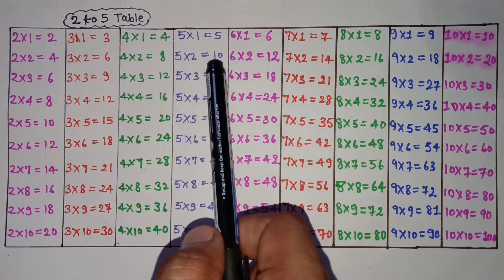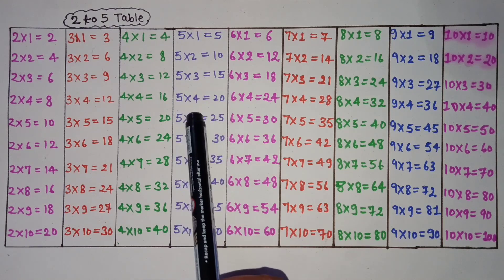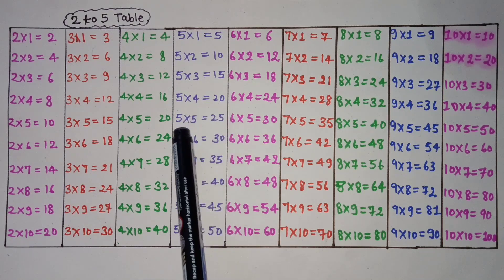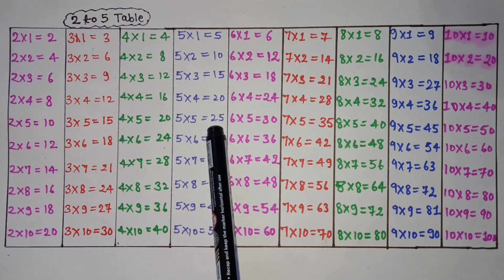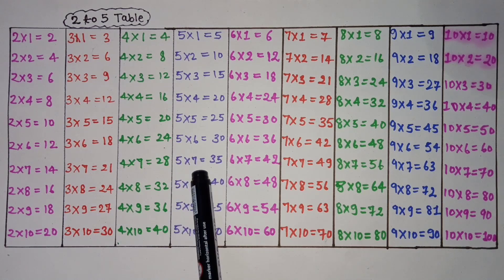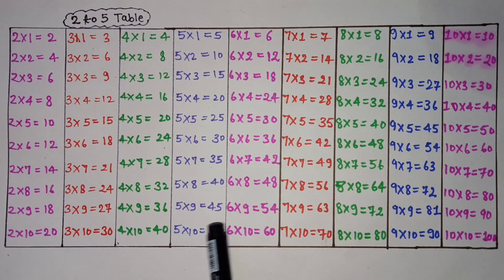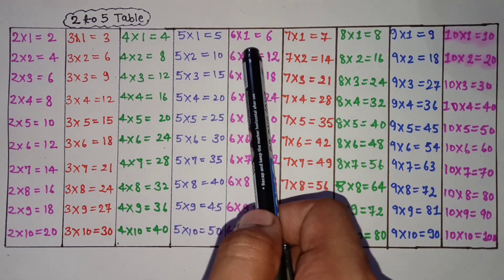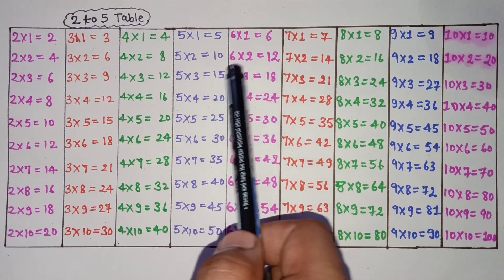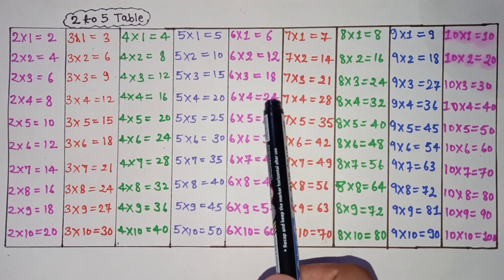5 1 is 5, 5 2 is 10, 5 3 is 15, 5 4 is 20, 5 5 is 25, 5 6 is 30, 5 7 is 35, 5 8 is 40, 5 9 is 45, 5 10 is 50.